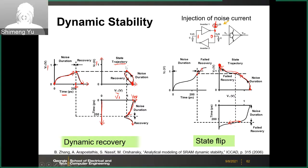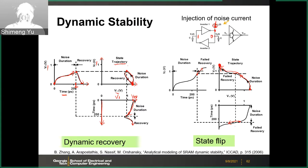From the waveform and trajectory, you can analyze the impact of noise. Both the duration and the amplitude of the current matter — essentially it is the charge dumped into the storage node that matters, because current multiplied by time equals charge. There will be a critical charge that the storage node can tolerate; injecting additional charge beyond that — determined by either a long noise duration or a high amplitude — will cause a flip.